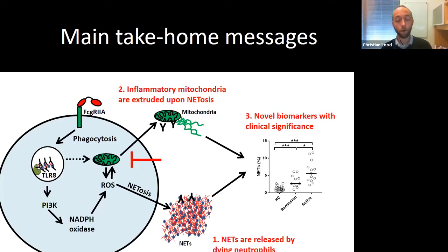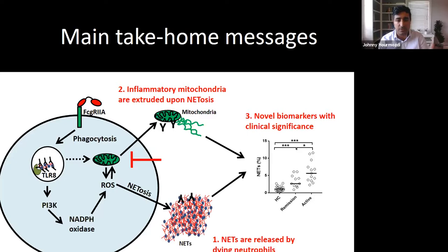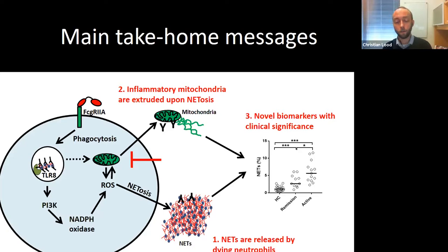A related question: do lupus and RA patients have decreased scavenger molecules like DNase compared to healthy controls? Correct — in many conditions we have analyzed, including RA and lupus, we see impaired clearance of NETs. This can be due to lower DNase levels, but also because antibodies targeting NETs prevent DNase from reaching the DNA, instead forming immune complexes that activate the immune system. The macrophage side may also be impaired in recognizing and clearing NETs.